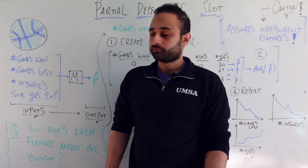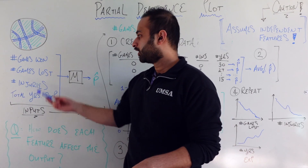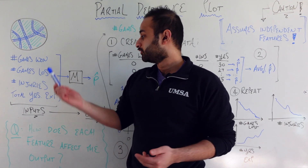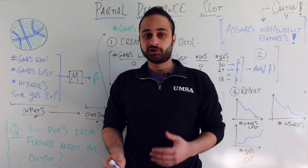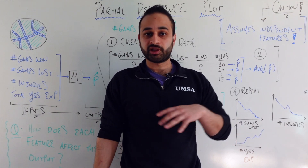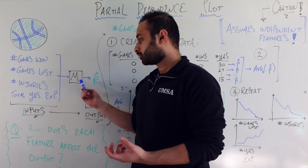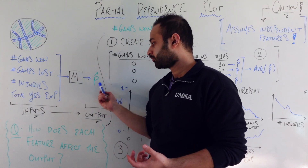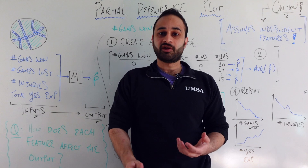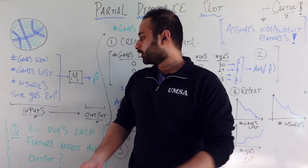To keep things simple, we're considering four features: the number of games won so far, the number of games lost so far, the number of injuries on the team in total, and the total years of experience of all the players on the team. We feed these four features into a model and get a predicted probability p-hat — the probability the team will win their next game.